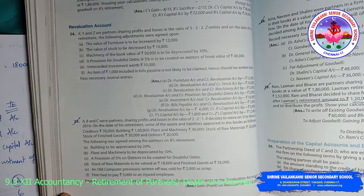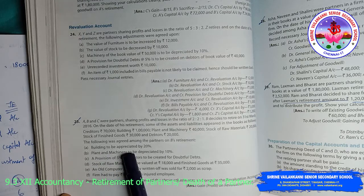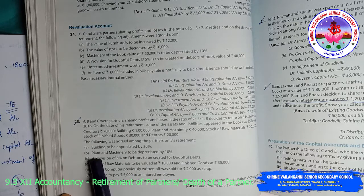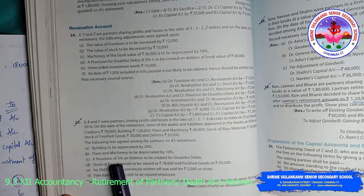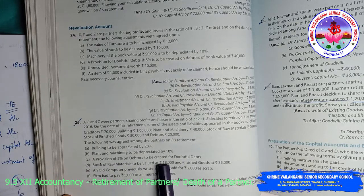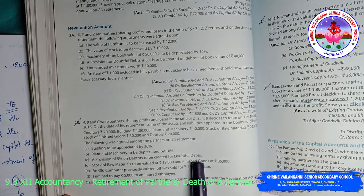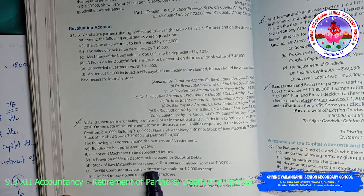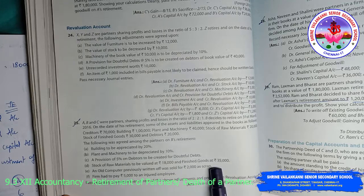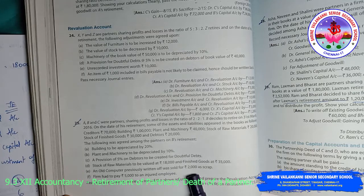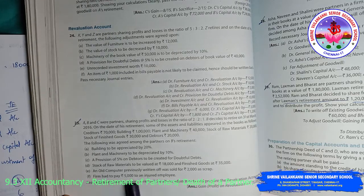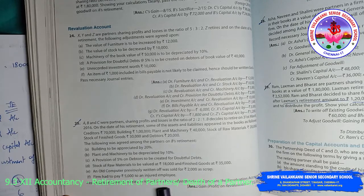The following was agreed among the partners on B's retirement: building to be appreciated by 20%; plant and machinery to be depreciated by 10%; a provision of 5% on debtors to be created for doubtful debts; stock of raw materials to be valued at 18,000 and finished goods at 35,000; old computer previously written off was sold for 2,000 as scrap; firm had to pay 5,000 to an injured employee. Pass necessary journal entries and prepare revaluation account.